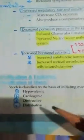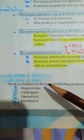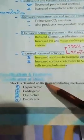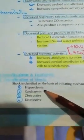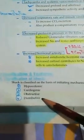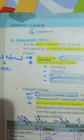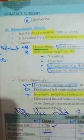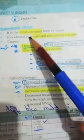Based on the initiating mechanism, shock can be classified into five types: hypovolemic, cardiogenic, obstructive, distributive, and endocrine shock. The most common type is hemorrhagic shock, and the most common cause of hypovolemic shock is hemorrhage.